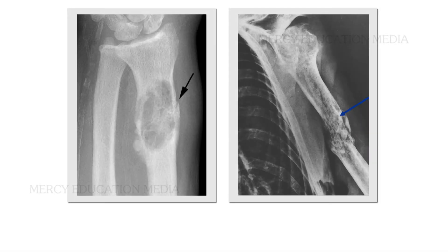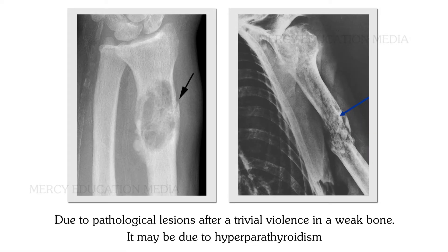What is a Pathological Fracture? This type of fracture occurs due to pathological lesions after a trivial violence in a weak bone. It may be due to Hyperparathyroidism.